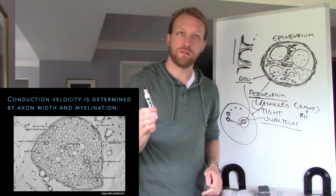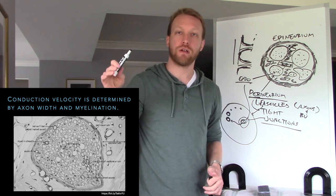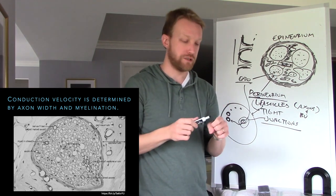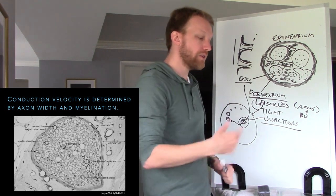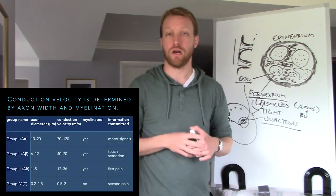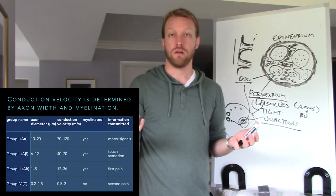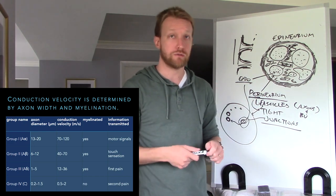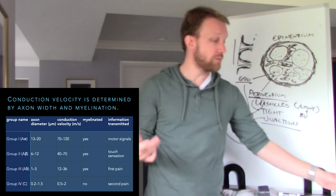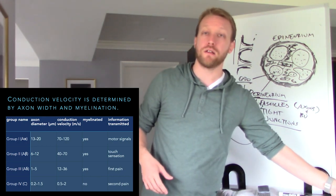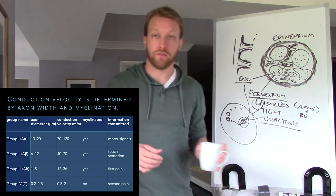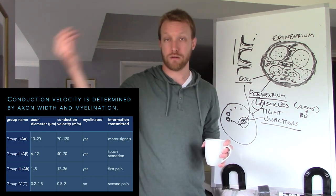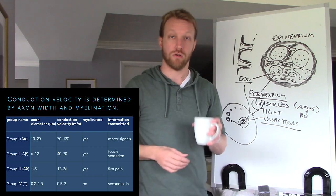You'll see axons of different sizes — some myelinated, some not — because we have a mixture of motor and sensory fibers. Sensory fibers can be large or small diameter, and the same is true for motor fibers. We also have smaller unmyelinated autonomic fibers as well as large myelinated somatic motor fibers that allow conscious control over our muscles.